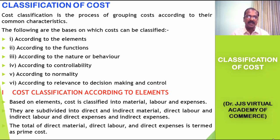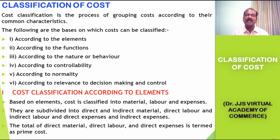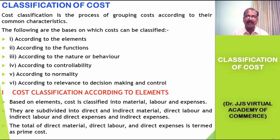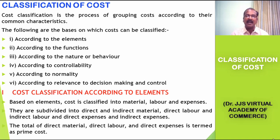The first classification is cost according to the elements. Based on the elements, cost can be classified into material, labor, and expenses. Further, material could be divided into direct material cost and indirect material cost. Similarly, labor could be divided into direct labor and indirect labor. And expenses could be divided into direct expenses and indirect expenses.